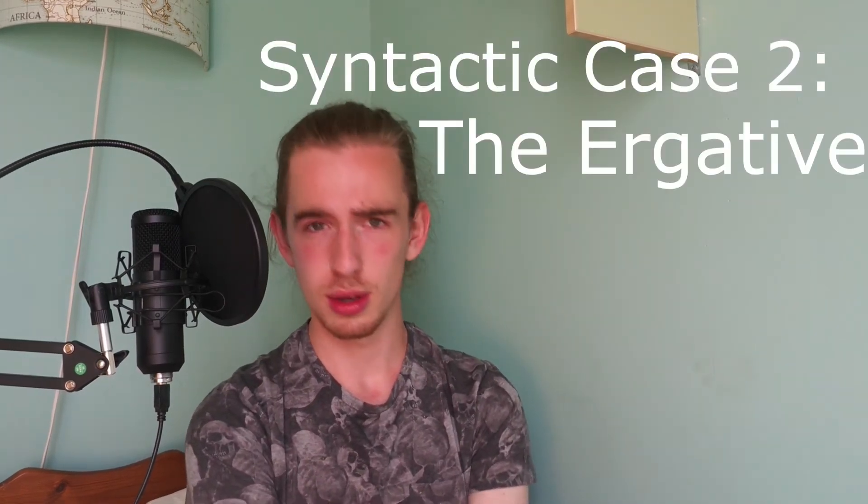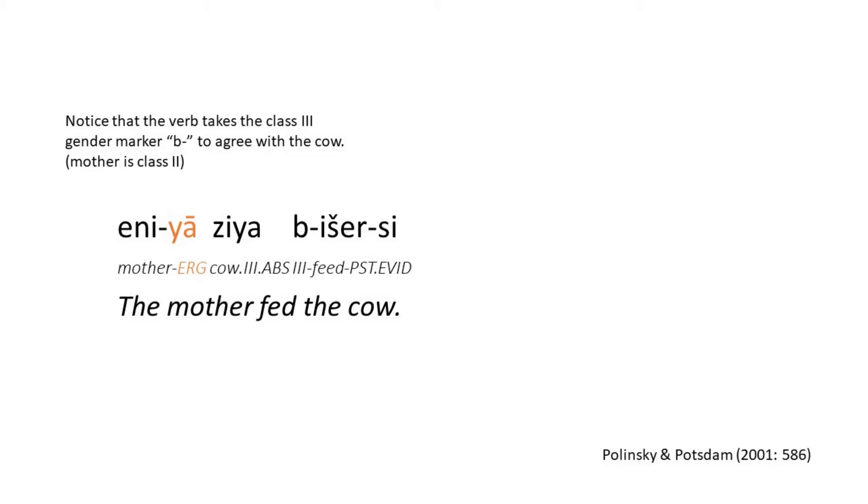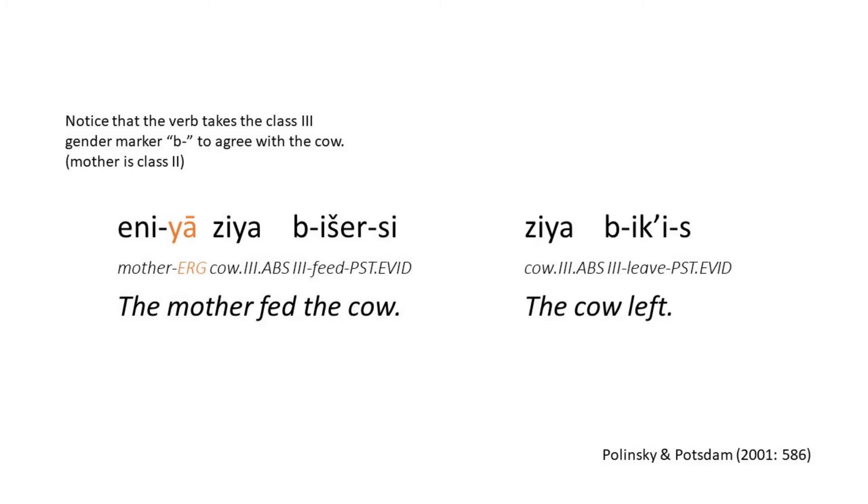Luckily, the plural in Tsez is quite simple - there's one suffix added to absolutive nouns and one added to oblique nouns. Syntactic case number two is the ergative. The ergative case is a very common feature of languages in this specific area, and it's got a reputation. In a sentence that involves a noun acting on another noun, the one doing the acting is put into the ergative case. If a noun is just acting on its own, it's left in the absolutive.